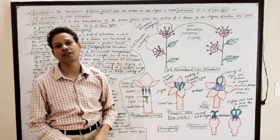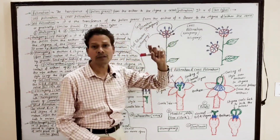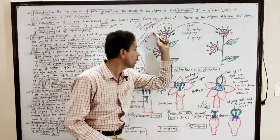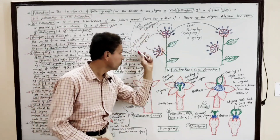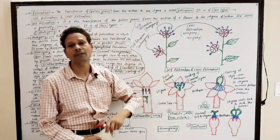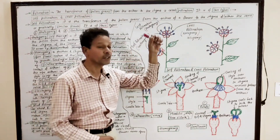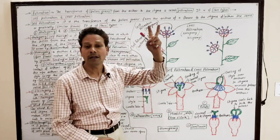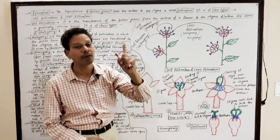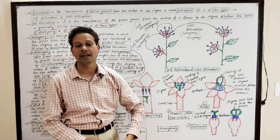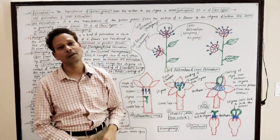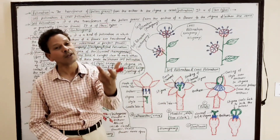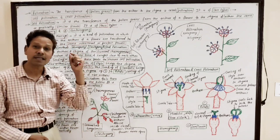In the case of self-pollination, it involves transference of pollens from the anther to the stigma of the same flower, or between different flowers of the same plant, or transference of pollens from one flower to another flower of a different plant having the same genetic material — like a clone, in which all plants are identical.